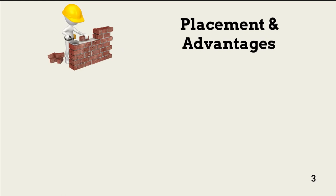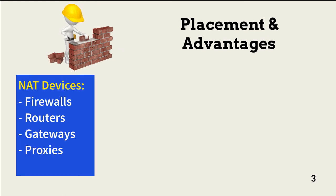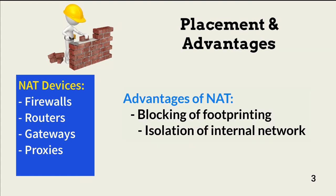Devices we can use for NAT implementation include firewalls, routers, gateways, and proxies. The biggest security advantage of using NAT is the blocking of threat actor network footprinting. The threat actor can only see the public addresses used. He can't see the IP addresses used internally or the subnets configured. The internal network is effectively separated from access by external entities.